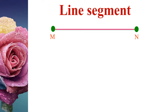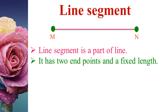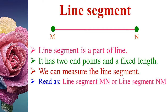Next, coming to line segment. A line segment is a part of a line. It has two end points and a fixed length, so we can measure the line segment. Here we have line segment MN. This line segment MN has two end points and a fixed length. We read it as line segment MN or line segment NM, and we write it as MN or NM with the symbol of line segment above the letters.